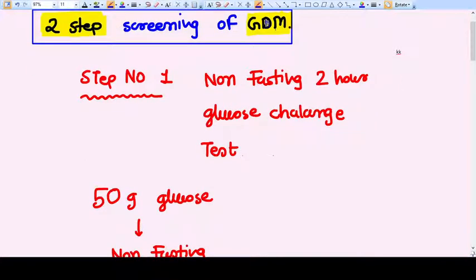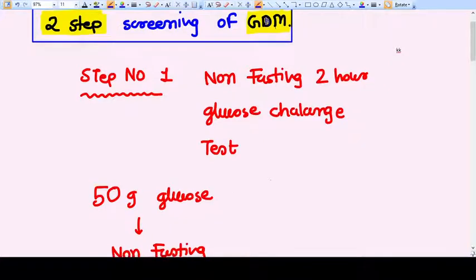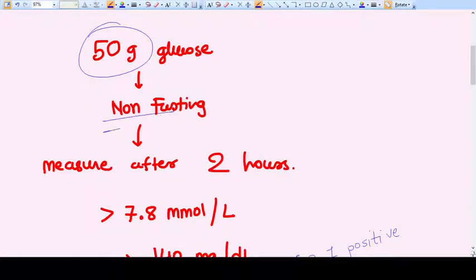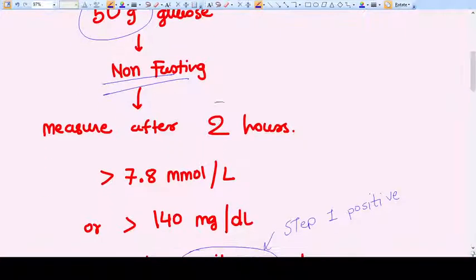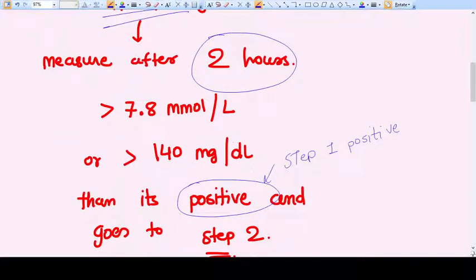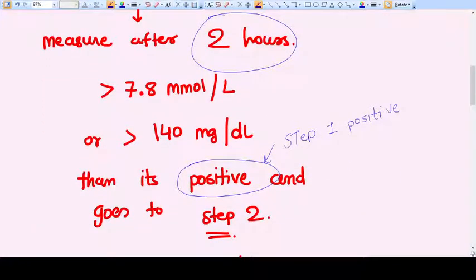What is step number one? In which we are going to do a non-fasting, remember non-fasting, two-hour glucose challenge test. In which we are going to give the patient 50 grams of glucose as oral intake without any fasting. And then after exactly two hours, we are going to measure the glucose levels.